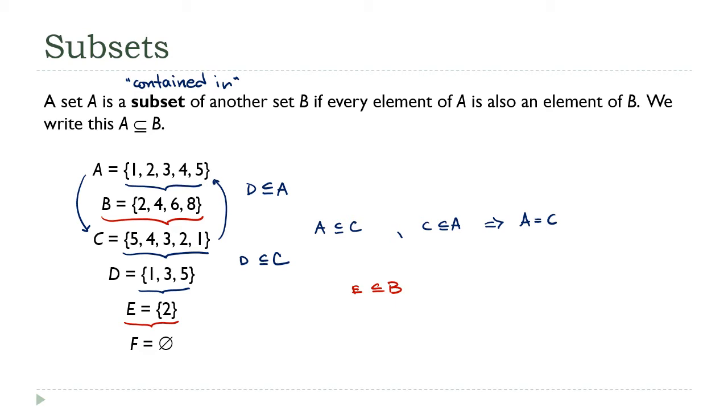We've got one more special case here. How about this empty set? How does the empty set fit in here? There's a rule: the empty set is a subset of every set. So I would say that F is a subset of A, F is a subset of B, F is a subset of C, all of them, D and E as well. The empty set is a subset of every set.